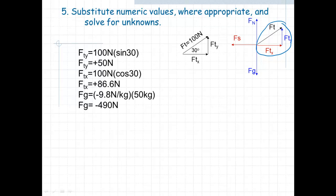In this case, since FTY is the opposite angle, we're going to use SOH-CAH-TOA and solve for FTY as 100 Newton times the sine of 30, which gives us an FTY of 50 Newton. We want to do the same thing in the horizontal, but in this case, we're going to use the cosine. So that's going to give us FTX equals 100 Newton times the cosine of 30 and gives us an FTX of positive 86.6 Newton.